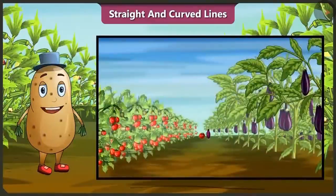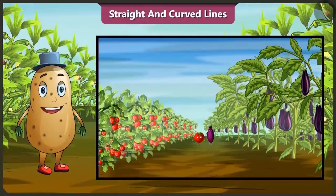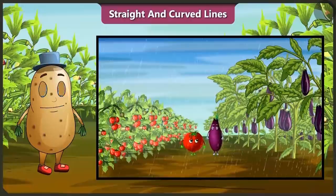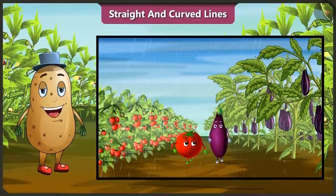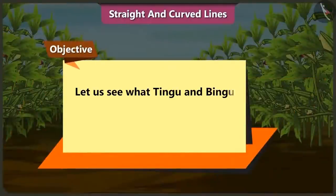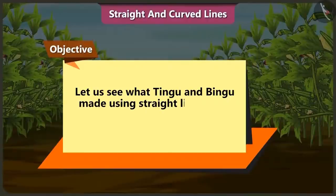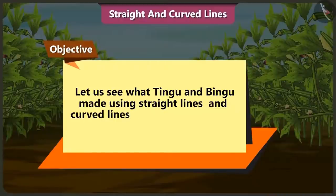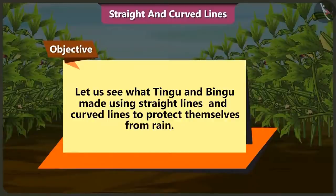Friends, Tingu and Bingu have gone for a walk without taking the umbrella. Suddenly, it starts raining. Let's look at what Tingu and Bingu made using straight and curved lines to protect themselves from rain.